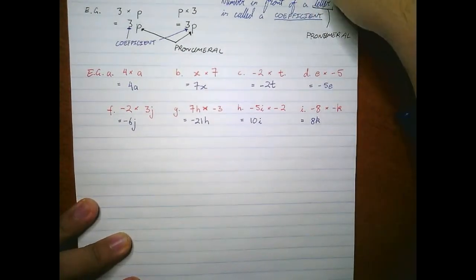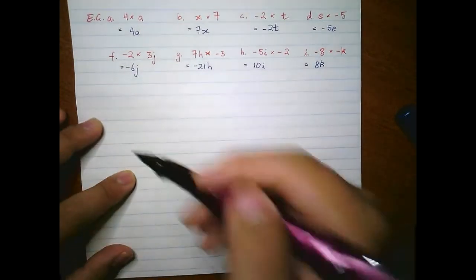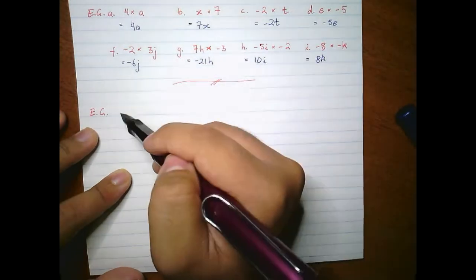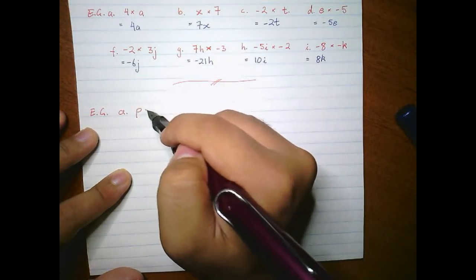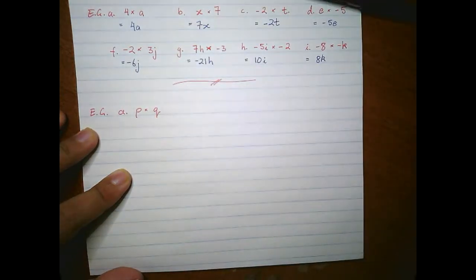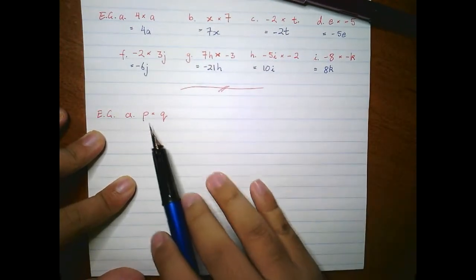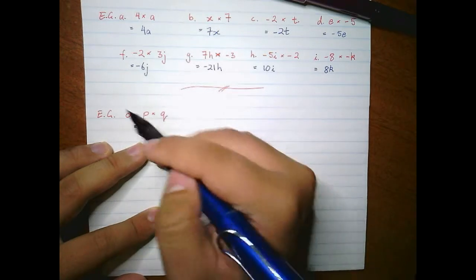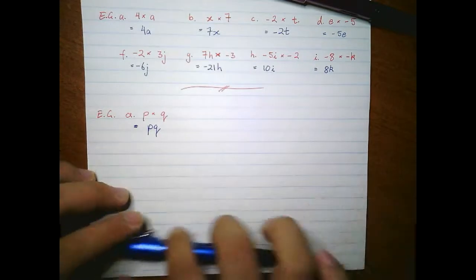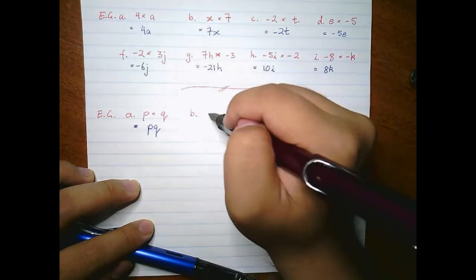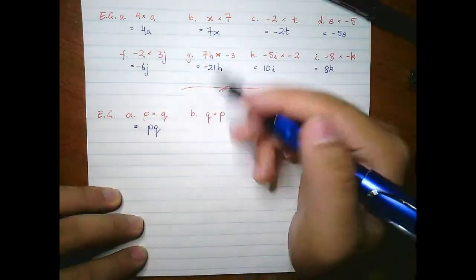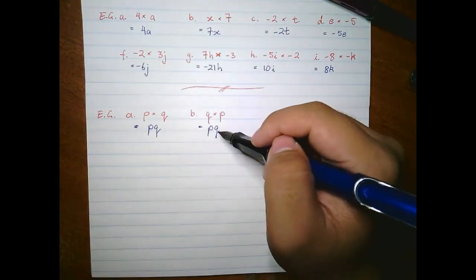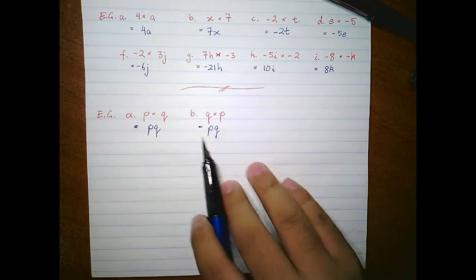Now, what happens if we have two letters multiplying with each other? If I had p times q — just like we would with numbers, because remember these letters are just like numbers — we bring them together without the multiplication symbol, so this is just pq. Even if it were q times p, it's still pq, because we as mathematicians like to keep everything in alphabetical order.